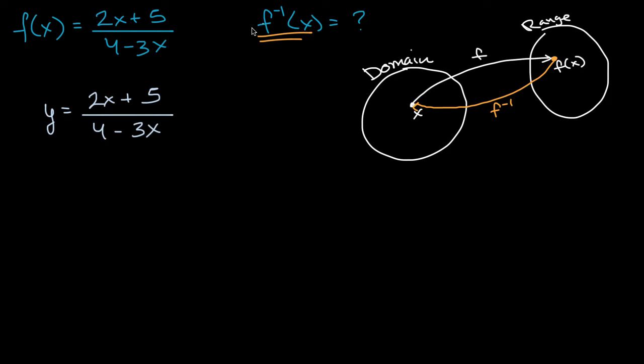For our inverse, the relationship between x and y is going to be swapped. And so in our inverse, it's going to be true that x is going to be equal to two y plus five over four minus three y. And then to be able to express this as a function of x, to say that what is y as a function of x for our inverse, we now have to solve for y. So it's just a little bit of algebra here.